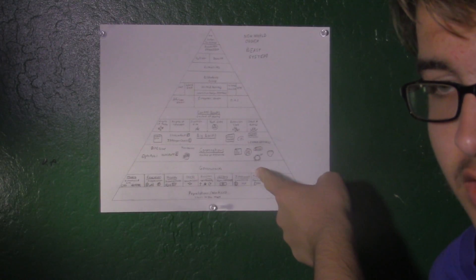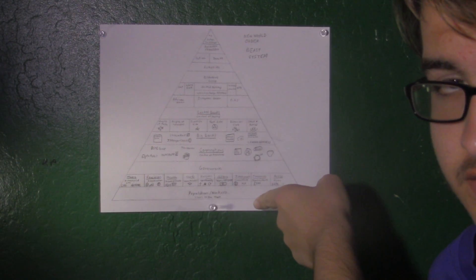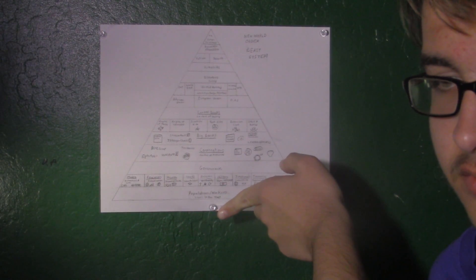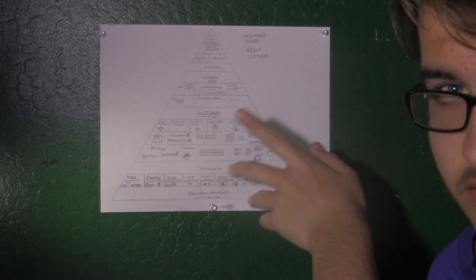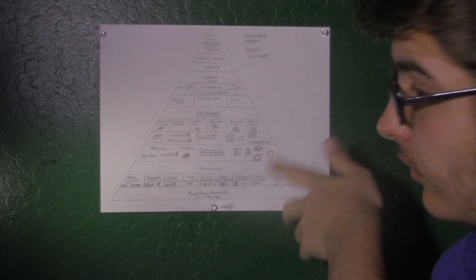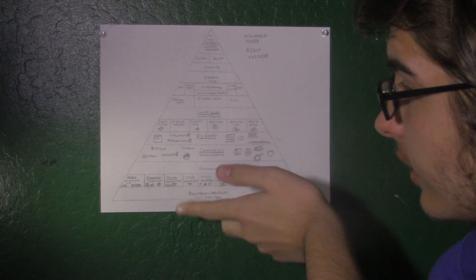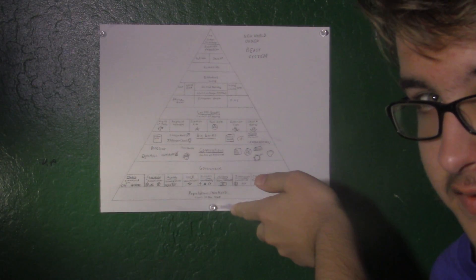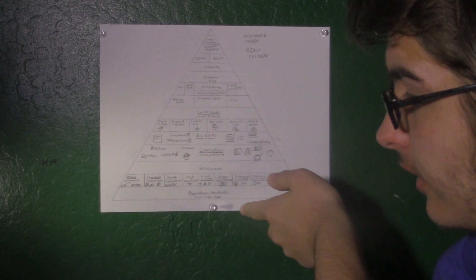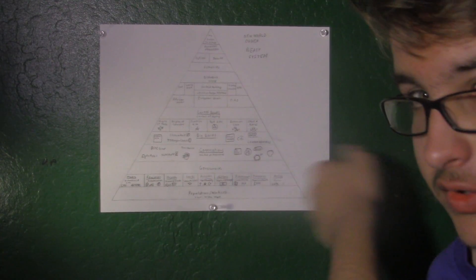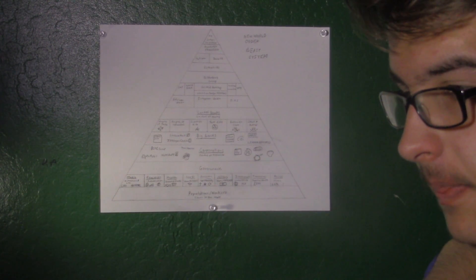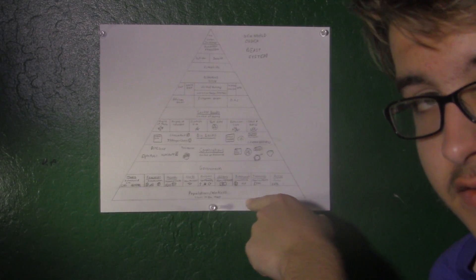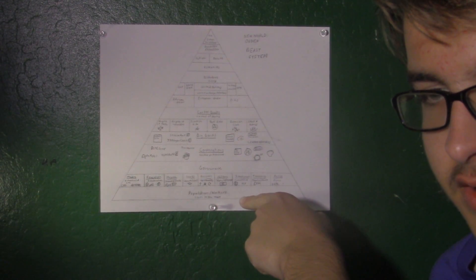Freemasonry was taken over and is now mostly a Catholic secret society. The CIA is a mostly Catholic group — it's very rare to see someone who isn't Roman Catholic, hasn't been to a Jesuit university, or isn't part of Skull and Bones, Knights of Malta, or Knights of Columbus. A similar thing applies to the NSA, though not to the same degree.